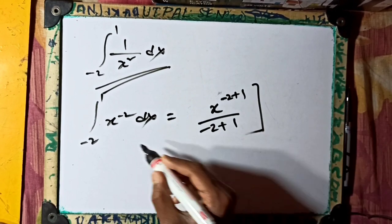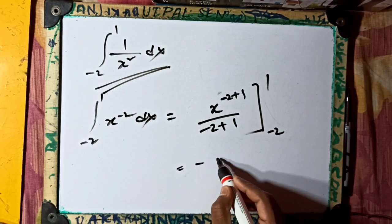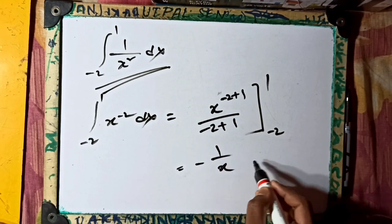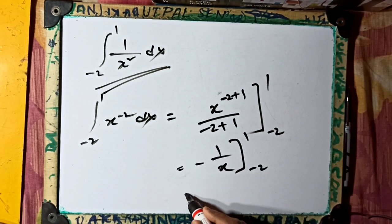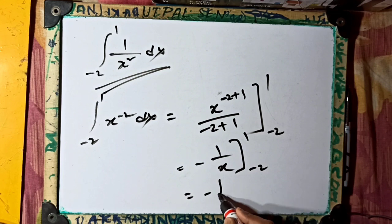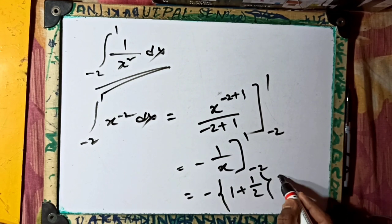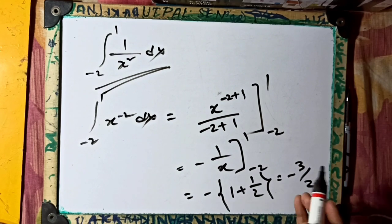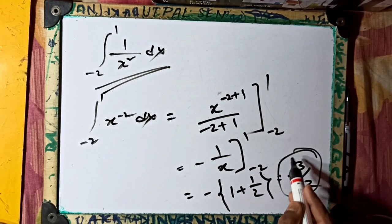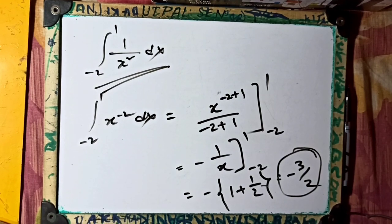With the exponent minus 2 plus 1, we apply the limit from minus 2 to 1, giving minus 1 by 2. So minus 3 by 2 is the answer. The conclusion: minus 3 by 2 is the main result.